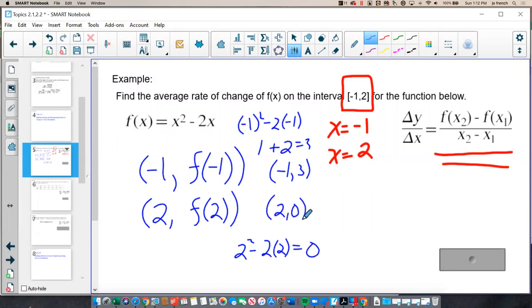Using my average rate of change formula, I get 0 minus 3 over 2 minus negative 1, which is negative 1, which means my average rate of change over that interval is negative 1.